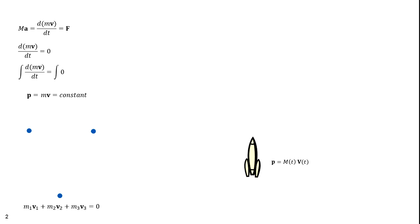Rocket propulsion is a good example of the conservation of momentum. Let's establish a momentum p at time t. The rocket propels itself by ejecting gas at a high speed in one direction and is accelerated by recoil in the opposite direction. Let's say that the gas is ejected relative to the rocket at a velocity of minus v(t). The total delta v would be V(t) minus v(t). Relative to us, at time t, the rocket was moving at V(t).